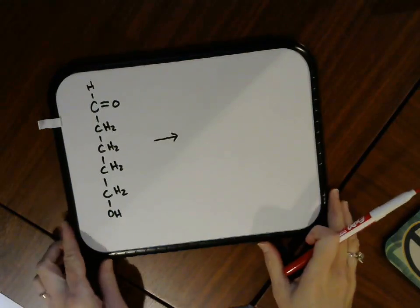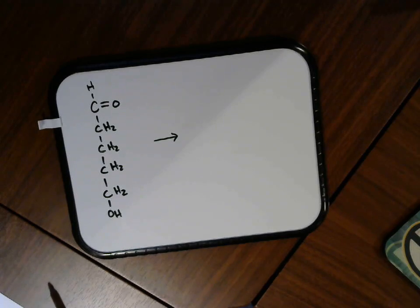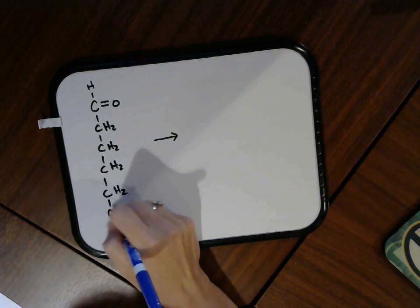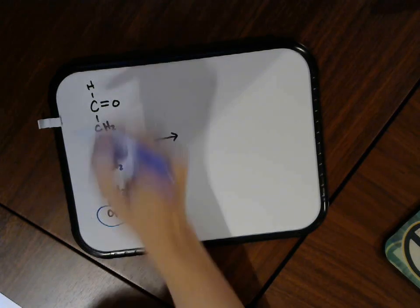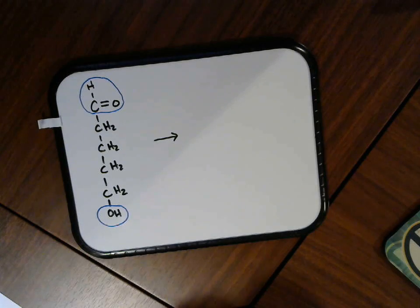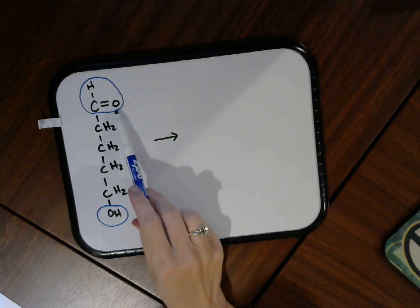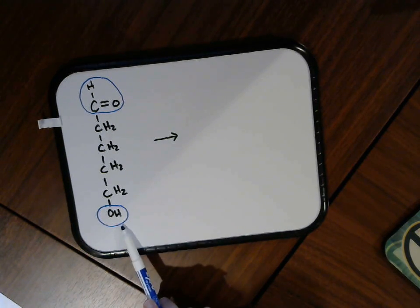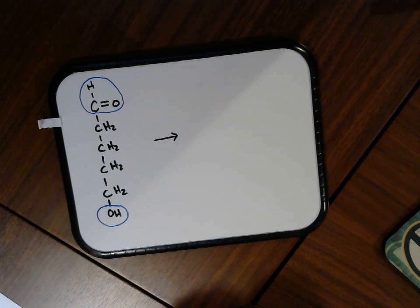There is a very important exception to that. An important exception is when you have a molecule that has both an alcohol in it, the hydroxide group, and an aldehyde or a ketone in it. This molecule right here has an aldehyde at one end and it has a hydroxide or an alcohol group on the other end. So this would be an intramolecular hemiacetal formation.